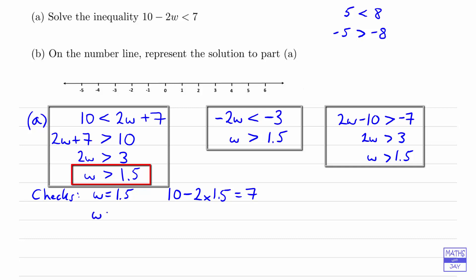And then because we found that w has to be greater than 1.5, we're going to choose any number greater than 1.5. So I'm going to choose 2. And we want to find that the answer of 10 minus 2w is less than 7. So we've got 10 minus 2 times 2 is 10 minus 4, so it's 6. And that is less than 7. So we have found that we have got the right answer.